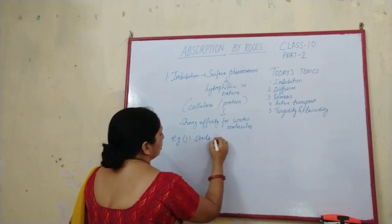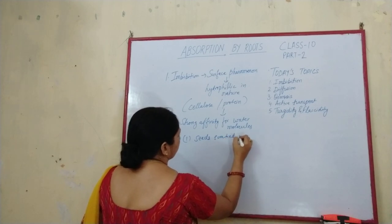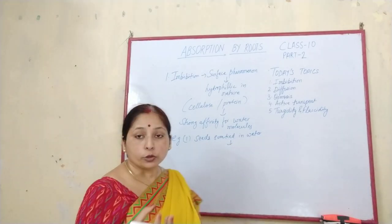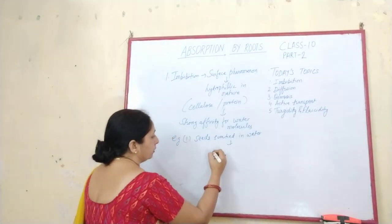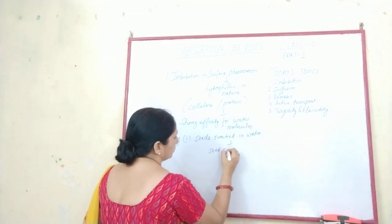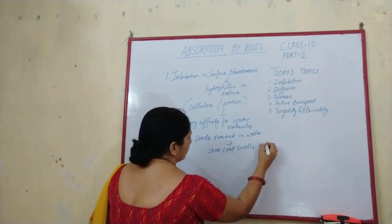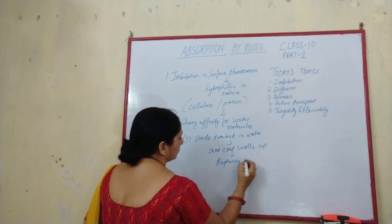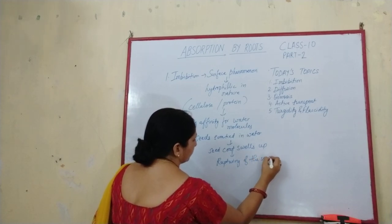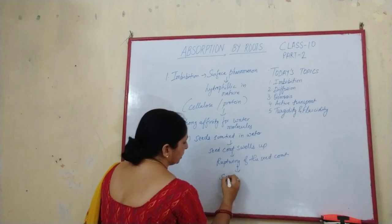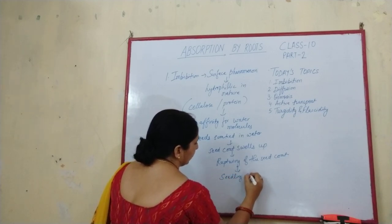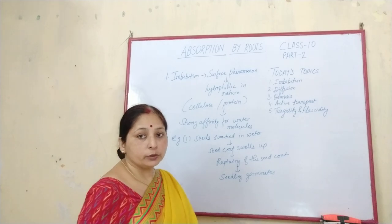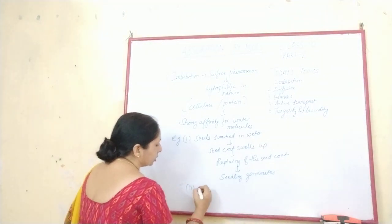For example, consider seeds soaked in water. When we soak seeds in water, after 2 or 3 days we observe that the seed coat swells up, resulting in the rupturing of the seed coat, and the seedling germinates. So the process of germination is also associated with the imbibition process.